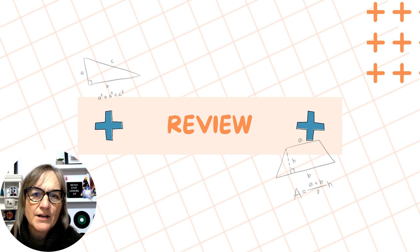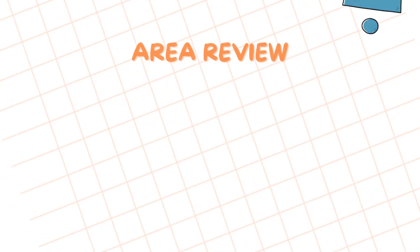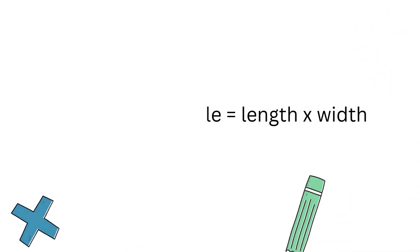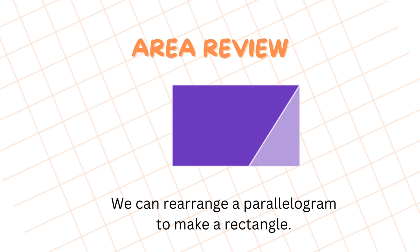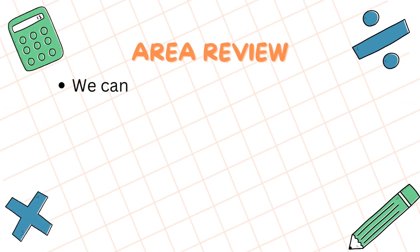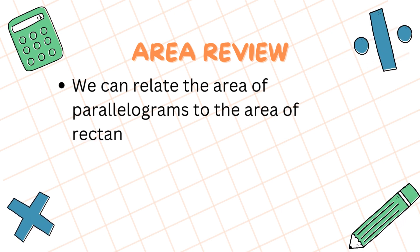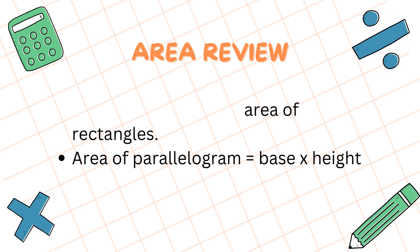Before we start talking about the areas of triangles, let's review what we already know about area. We know that to find the area of a rectangle we multiply the length by the width. We also saw that we can cut a parallelogram along its height, drag the resulting triangular shape to the opposite side to rearrange it as a rectangle, which helped us relate the area of parallelograms to rectangles. So the area of a parallelogram is base times height. With that in mind, let's start out with rectangles again.